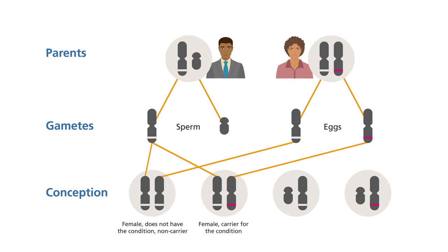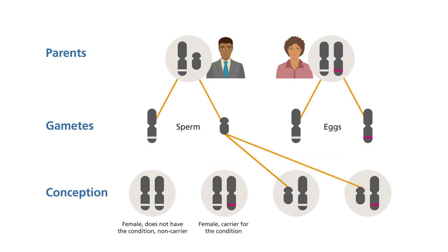If the child inherits the father's Y chromosome, as shown in these two combinations, the child will be a boy. He too has a 1 in 2 or 50% chance of inheriting his mother's usual form of the gene and would therefore not have the condition. Equally, he has a 1 in 2 or 50% chance of inheriting the altered form of the gene and so would have the condition.